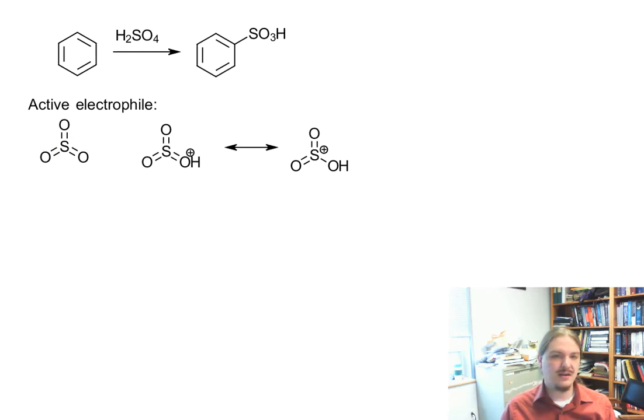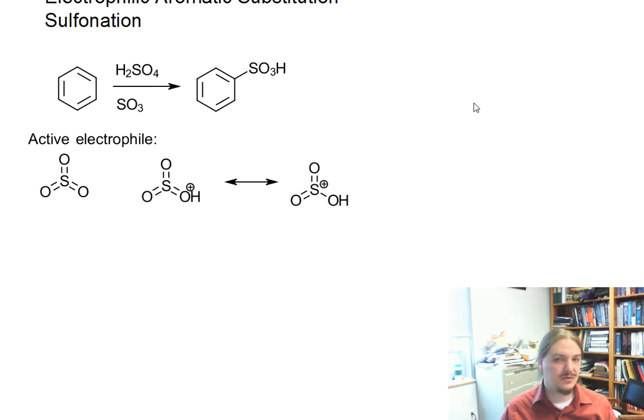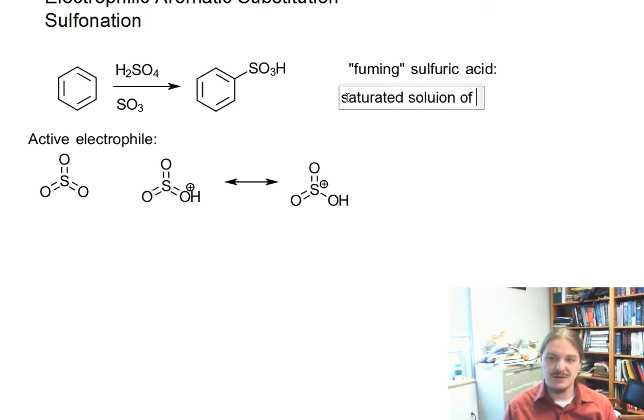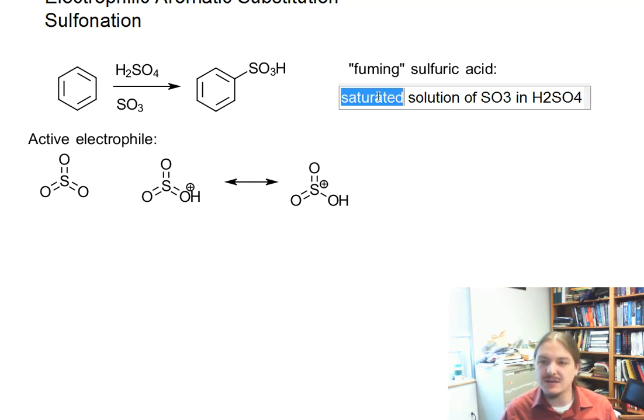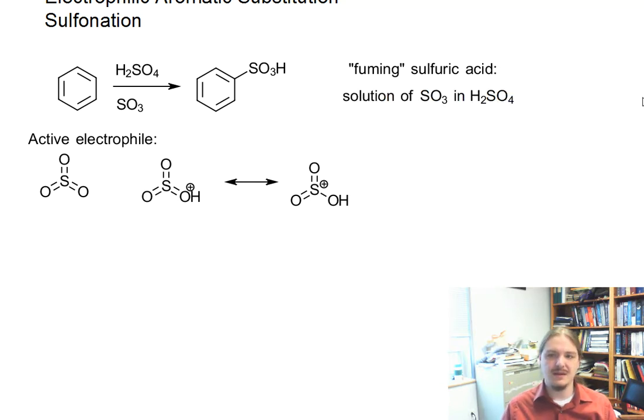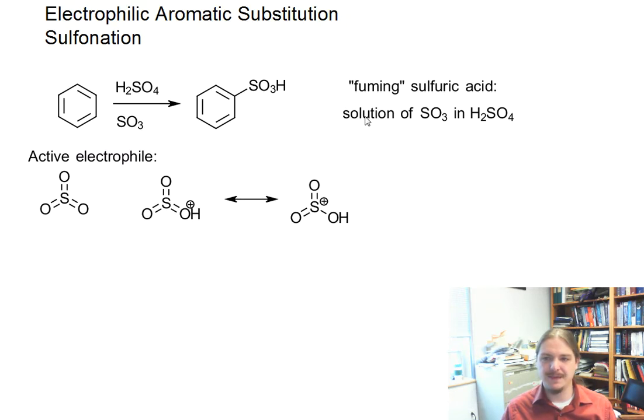And so because this is what the active electrophile is, some people will then use a sulfuric acid with sulfur trioxide in it and this is what one would call fuming sulfuric acid. Fuming sulfuric acid is a solution of sulfur trioxide in sulfuric acid.